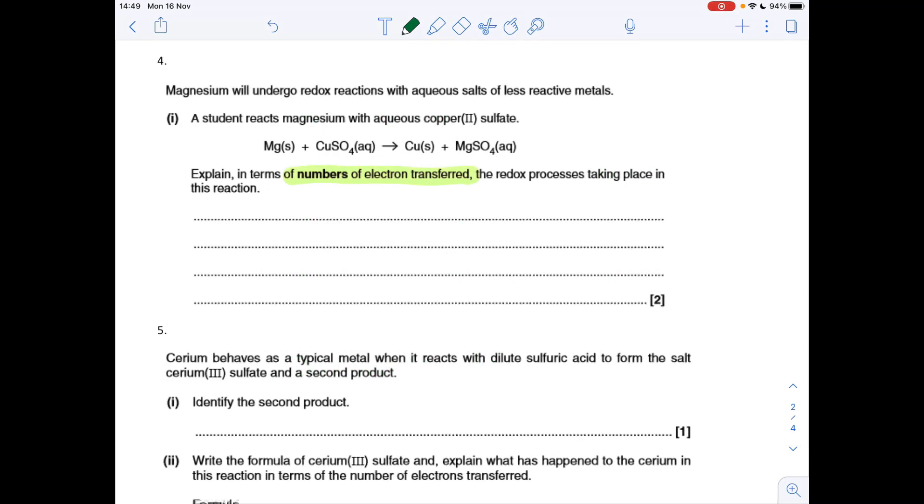Okay, so number four now. I've highlighted in terms of the numbers of electrons transferred. That's what we've got to bring into our answer. The redox process is taking place in the reaction. So is it oxidation? Is it reduction? And how many electrons are involved? So the way I'm going to tackle this, we'll start with magnesium. Zero as the element, +2 in the compound. So the magnesium's been oxidised. Its oxidation number's gone up. In terms of electrons, what it's done is it's lost two electrons.